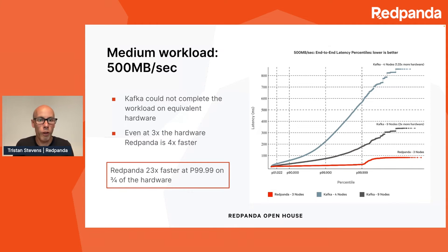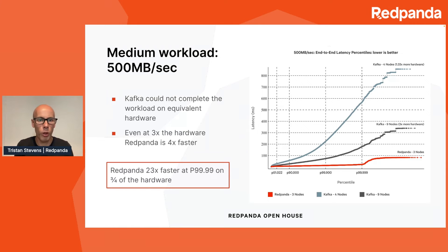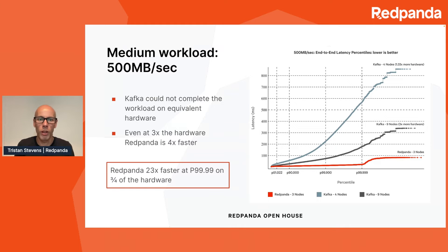The medium workload is 500 megabytes per second. On like-for-like hardware — three nodes of Redpanda against three nodes of Kafka — Kafka actually couldn't complete this workload; the producers couldn't keep up when consumers were turned on. When we added in an extra node, Kafka was able to complete the workload, but latency really degrades right from the get-go, with over 800 milliseconds at the tail. With three times the hardware — nine Kafka nodes — we start to get vaguely comparable, but Redpanda is still four times faster on a third of the hardware. With three quarters of the hardware, Redpanda is 23 times faster.